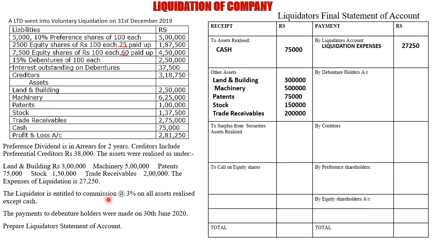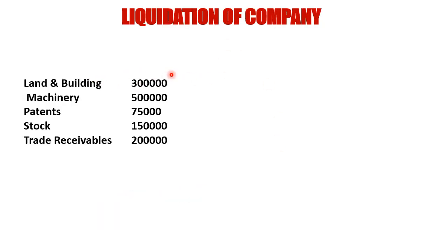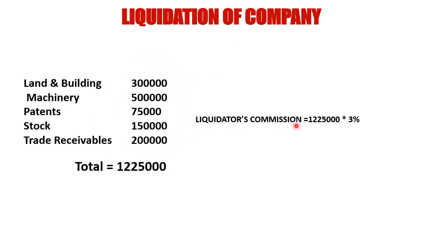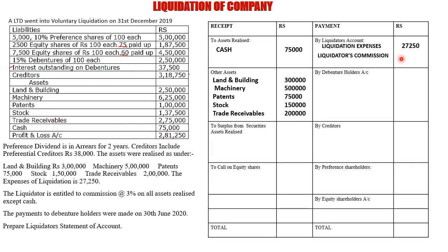Next, the liquidator is entitled to a commission at the rate of 3% on all assets realized except cash. Under the working, we note down all realized assets; once totaled, we get 12,25,000. So the liquidator's commission is 3% of 12,25,000, which equals 36,750.